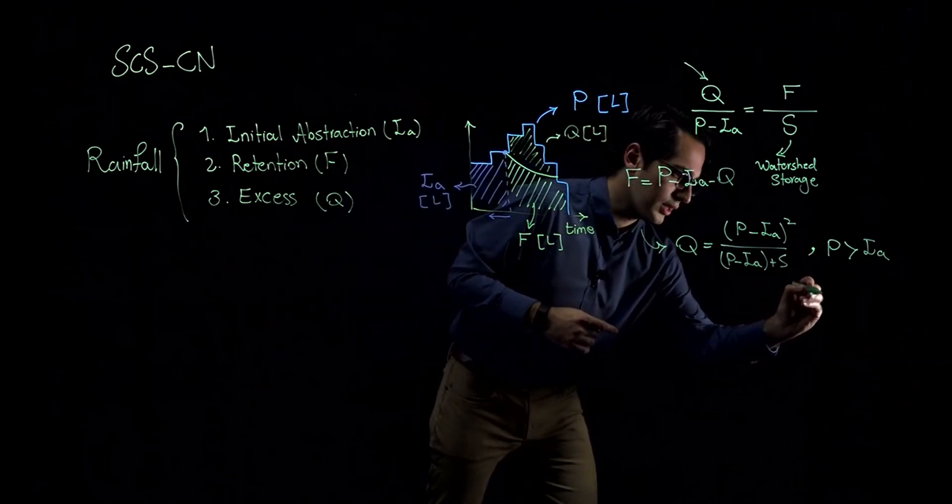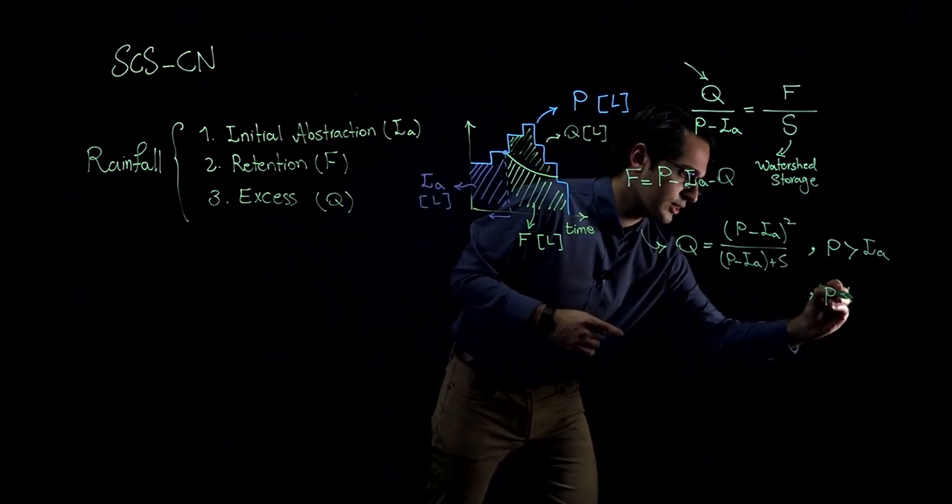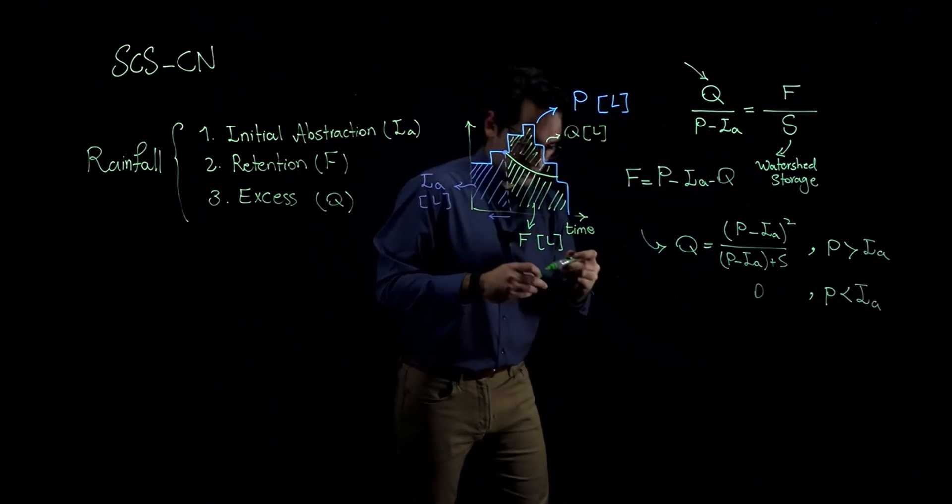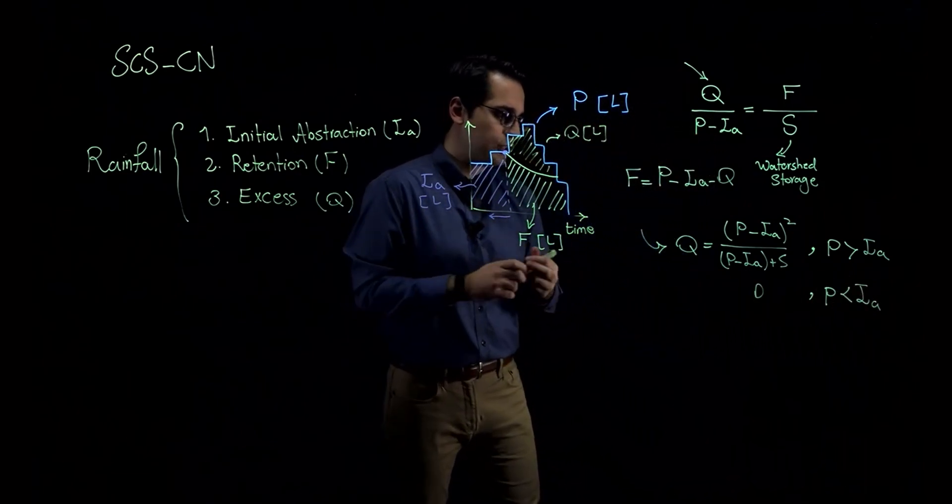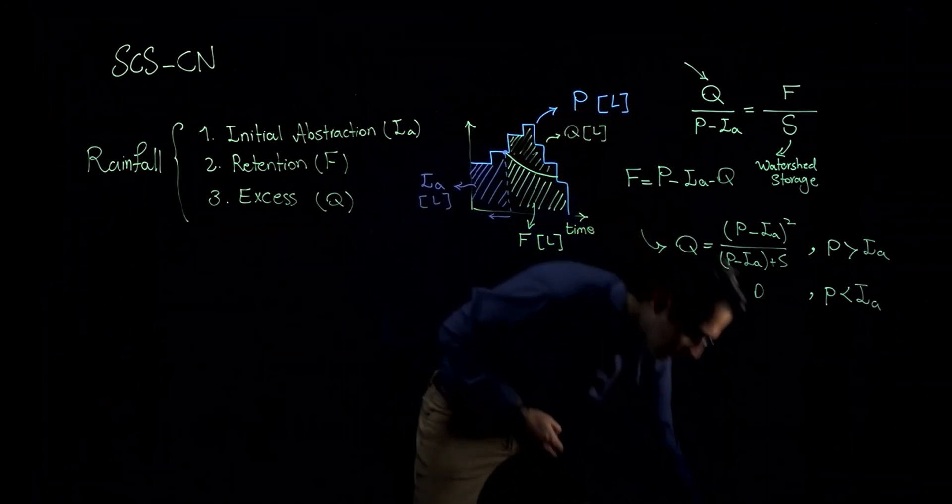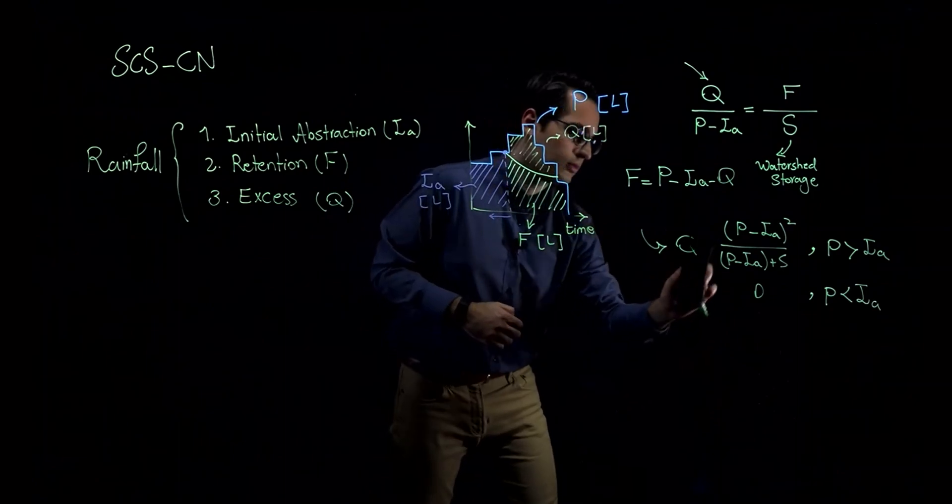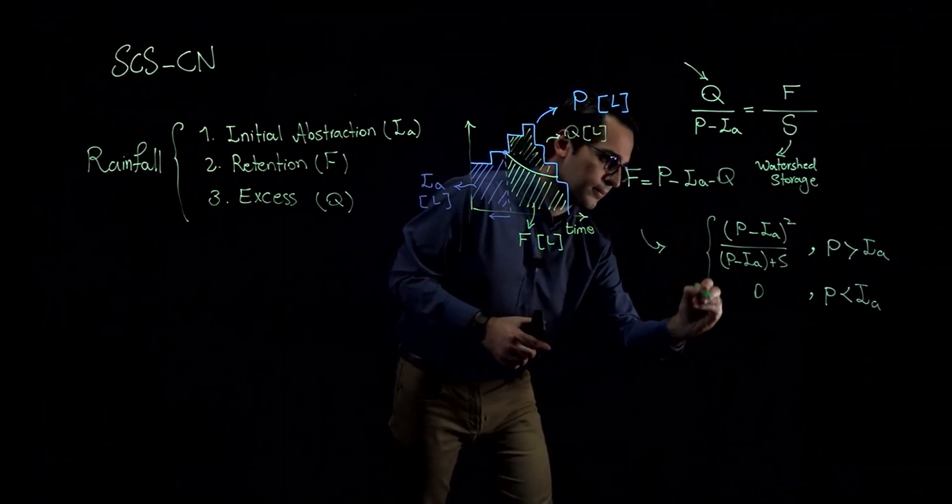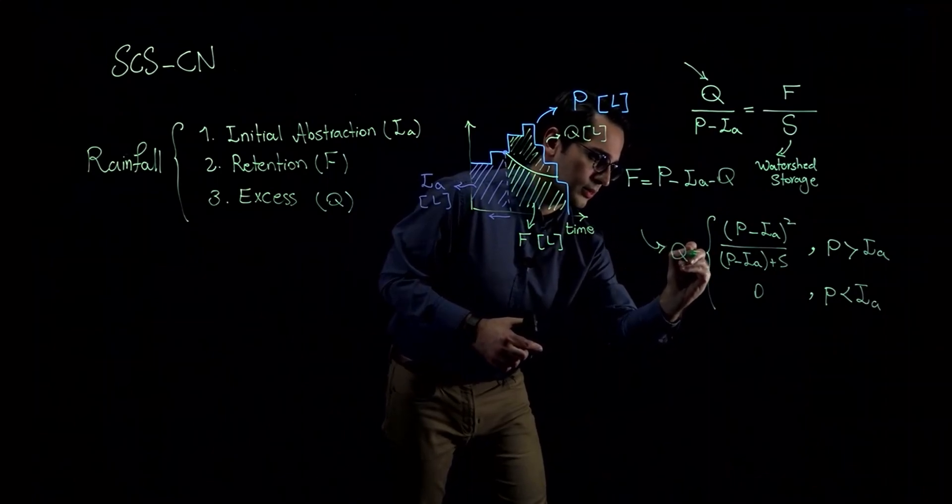So another condition would be if P is less than I_A, then Q would be zero. So it makes sense for me to have basically a Q like this. I'm going to get rid of this Q over here. There we go.